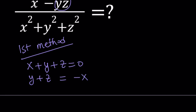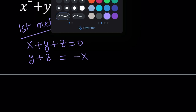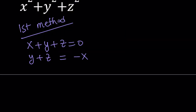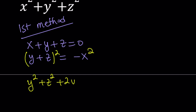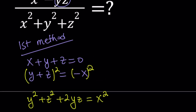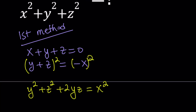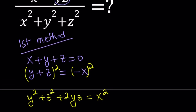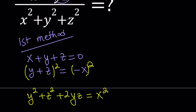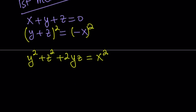Then I'll square both sides. On the left-hand side, we get y squared plus z squared plus 2yz. This is why I wanted to square it that way. On the right-hand side, squaring negative x gives positive x squared. Now it's critical to get what we're looking for — I would like to get x squared plus y squared plus z squared on the right-hand side, so I'm going to add y squared plus z squared to both sides.